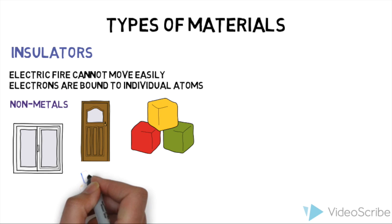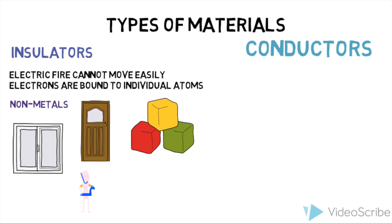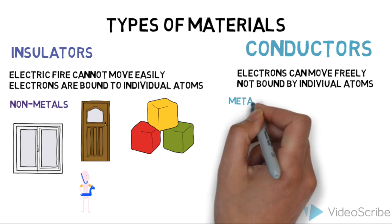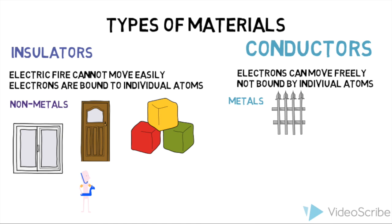Electrons are not bound to individual atoms in conductors. Therefore, they are able to move freely. Conductors include or are not limited to metals, like steel and aluminum and silver and gold and even salt water. The human body is also a good conductor. Do you know why? You guessed it, because we are made out of salt water.